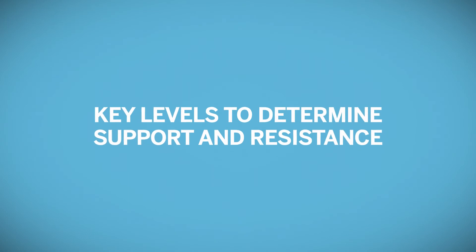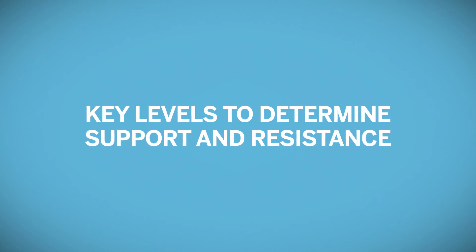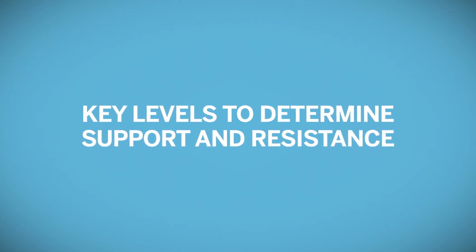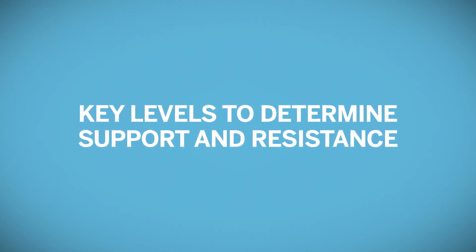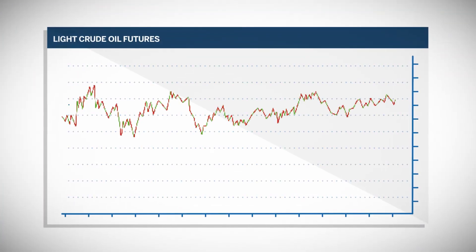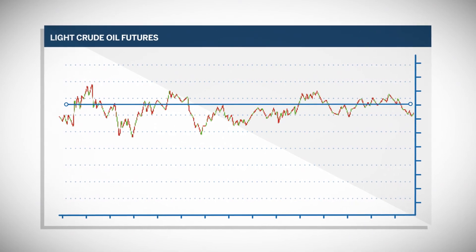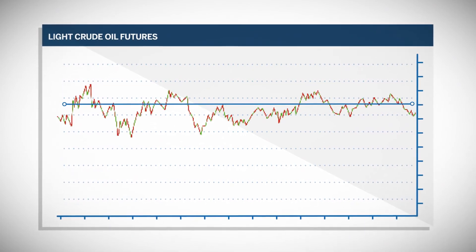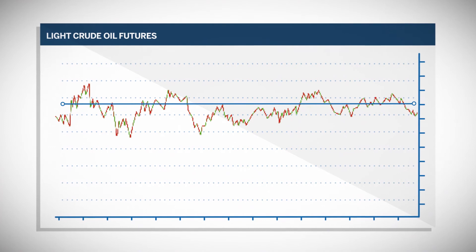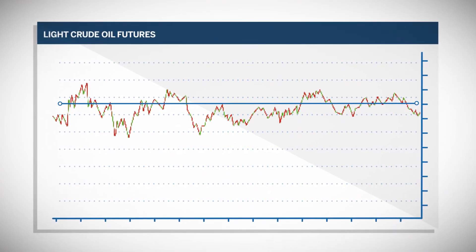Support and resistance can also be observed at certain price levels. Specific prices will create levels where price will find support or resistance because this is where there is potentially increased interest in trading that particular market. For example, the daily chart of crude oil shows how over a few years the $100 level in crude could not be successfully broken by more than a few dollars, and each time it attempted to break out, price retracted.